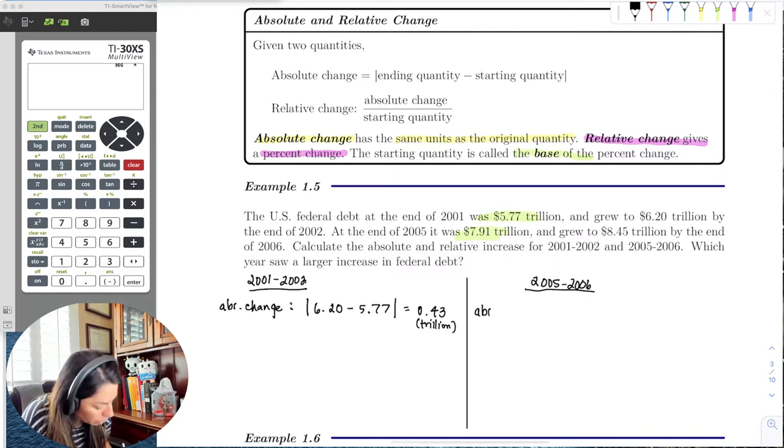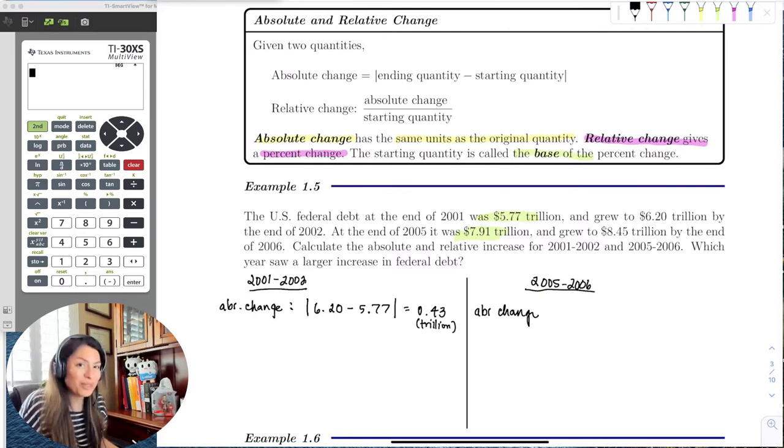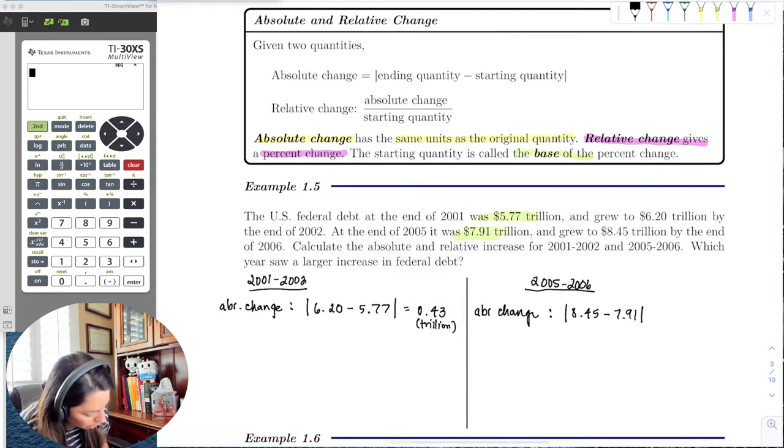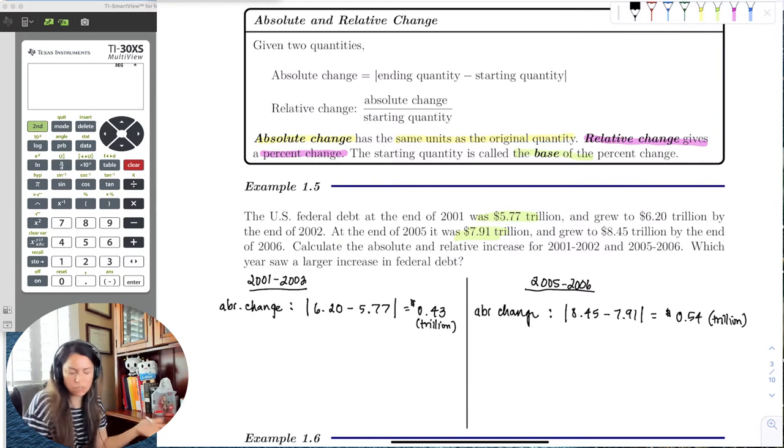OK, now let's go ahead and find the absolute change for 2005-2006. I want to do one at a time. OK, so the ending quantity was 8.45 minus 7.91 and that was equal to 0.54 and then trillion dollars. Leave everything in trillion because that's what we started with so we'll end with it.